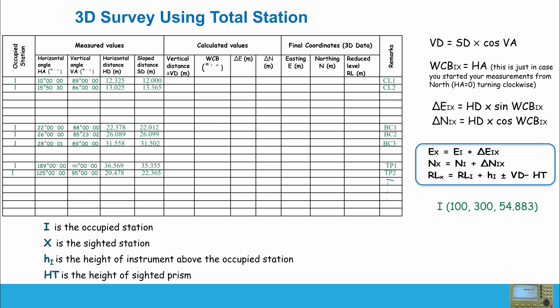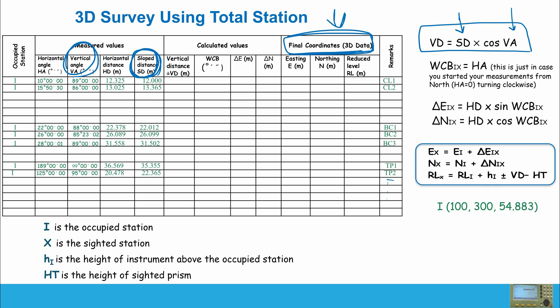The process is straightforward: every time, move your prism over the point of interest — whether it's a center line of a road, a building corner, or any terrain point — and record those four measurements, which will be used to calculate the final 3D coordinates. Let me remind you of the relations we'll use. The vertical distance is: VD = slope distance × cos(vertical angle), using the slope distance column and vertical angle column from the table. The whole circle bearing column is exactly the same value as the horizontal angle column.